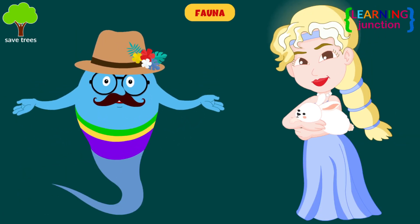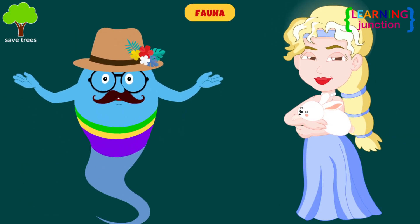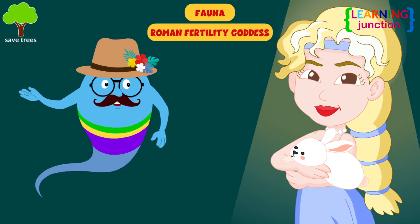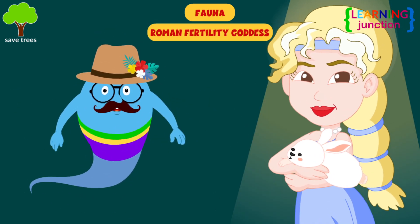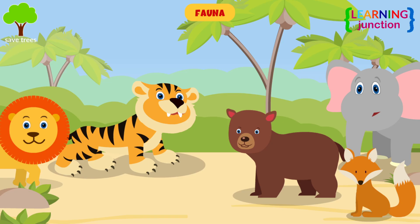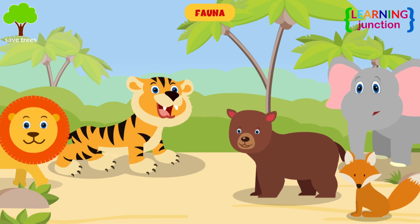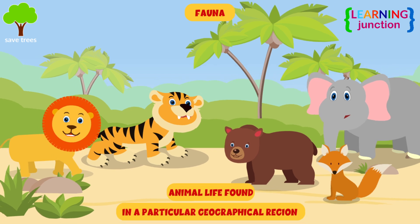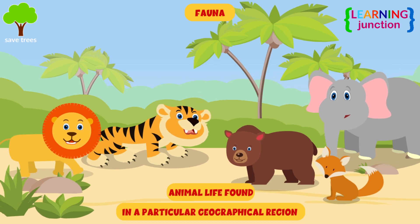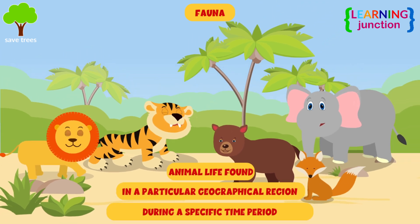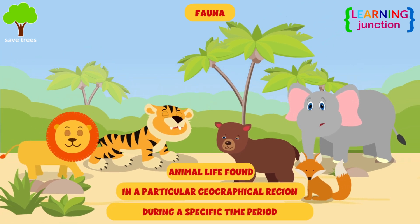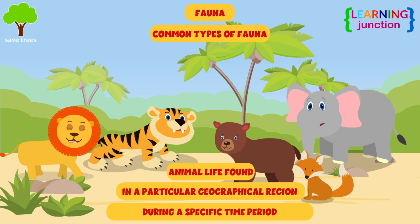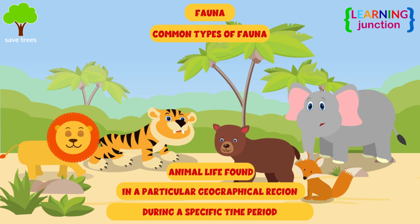Fauna. The term fauna is derived from the name of a Roman fertility goddess. It refers to the animal life found in a particular geographical region or during a specific time period. Some common types of fauna are as follows.